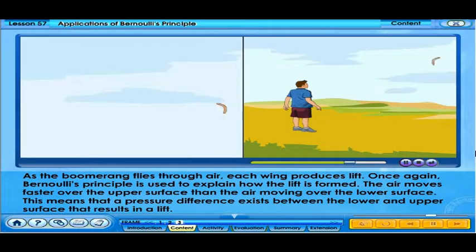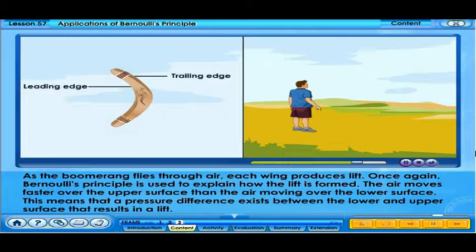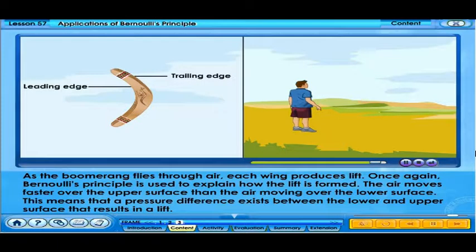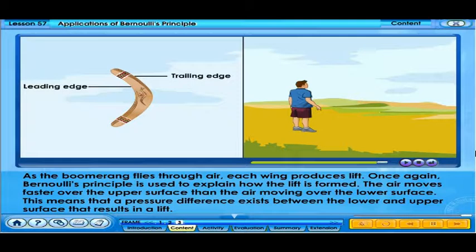As the boomerang flies through air, each wing produces lift. Bernoulli's principle is used to explain how the lift is formed. The air moves faster over the upper surface than the air moving over the lower surface. This means that a pressure difference exists between the lower and upper surface that results in a lift.